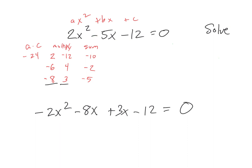Then I split that middle term into those two values: negative 8 and positive 3. Now I've got four terms. I'm going to look at these first two and these next two. Factor by grouping means I kind of split it apart and take the first group: negative 2x squared minus 8x. Can they both be factored by something? Is there a number that divides out of negative 2 and negative 8? Yes — negative 2, because they're both even, and they both have an x.